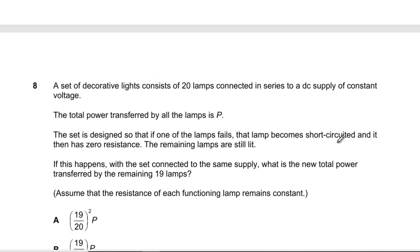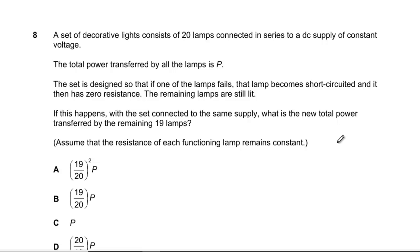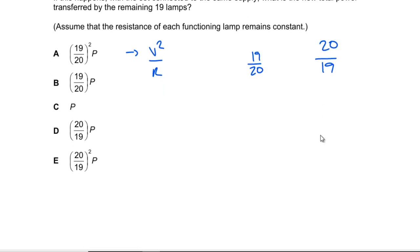Question 8: Set of decorative lights, 20 lamps in series, total power is P. If one lamp fails it becomes short-circuited with zero resistance but remaining lamps are still lit. What is the new total power? Power is V²/R, we've got the same V², our resistance will drop to 19/20, so when we divide that we'll get 20/19. So 20/19 P, which is D.